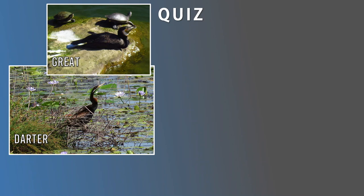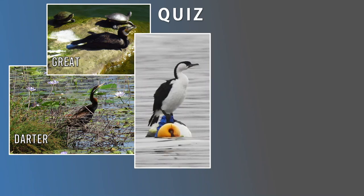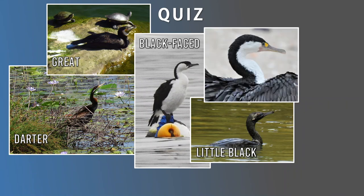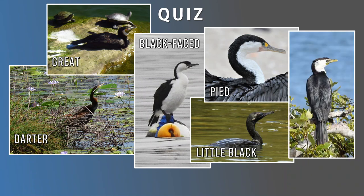Next, a good balancer — this one's a black-faced. Note the black reaches behind the eye and it has a gray bill. Here's the next one — a little black. Note the absence of facial marks. This one has a yellow dot and is black and white, so it's an Australian pied. And lastly, this one's a little pied — with its yellow bill and lack of facial markings.